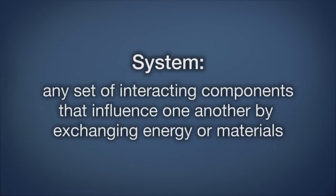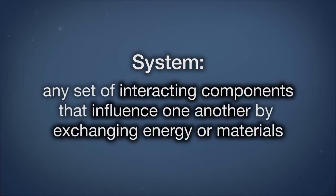Much of environmental science is studying how matter flows or does not flow between different systems. A system is any set of interacting components that influence one another by exchanging energy or materials. There are many important chemical reactions in environmental science, and some environmental problems can be described as a series of chemical reactions. Understanding matter and molecules is important in understanding these chemical reactions.